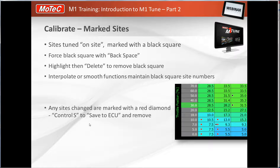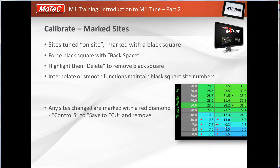Calibrated or marked sites are important. In the M800 series this was called asterisking; in the M1 it's indicated by a small black square. If the engine is exactly on a site — for example at 30% throttle at a specific RPM row — and you make a change, whether a quick lambda change or a manual number entry, that becomes a well-tuned site marked with a black square.